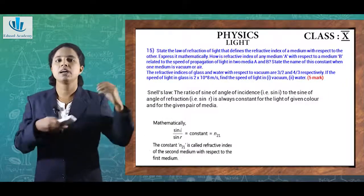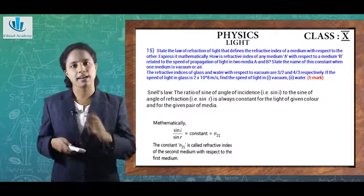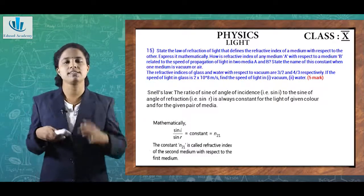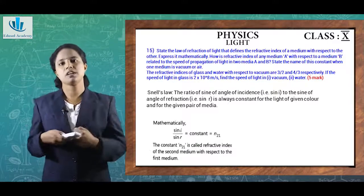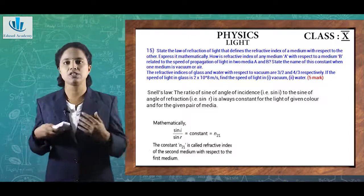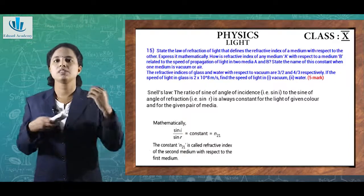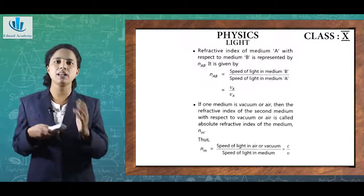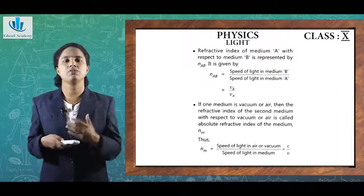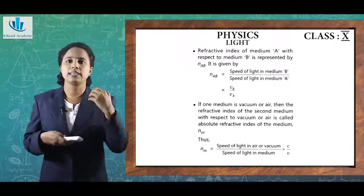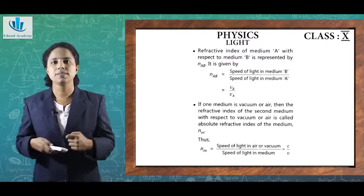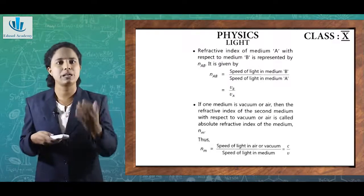Moving to five-mark questions: state the laws of refraction of light and define the refractive index of medium A with respect to medium B, relating it to the speed of propagation of light in the two media. Also state the name of the constant when one medium is vacuum or air.